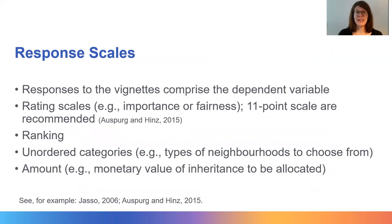Once you have created your vignettes, you need to decide how to measure your outcome of interest. The evaluations of the vignettes comprise the dependent variable, so the type of response scale you select influences your possibilities for data analysis. Rating scales are most often applied in vignette experiments — for example, a rating scale ranging from unfair to fair, with an 11-point scale generally recommended. You may also choose other response scales such as ranking or unordered categories. You can also create continuous measures by, for example, asking respondents to allocate money between vignette persons, where the dependent variable would be the amount allocated to each vignette person.